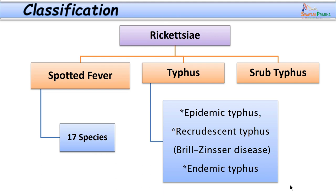Rickettsiae are classified clinically depending upon the type of fevers they produce — for example, spotted fever group, typhus group, and scrub typhus. The spotted fever group has the majority of species. Diseases included in the typhus group are endemic typhus, epidemic typhus and recrudescent typhus. We will discuss a little more about these diseases in this class.